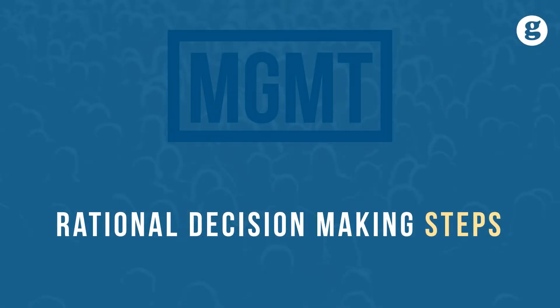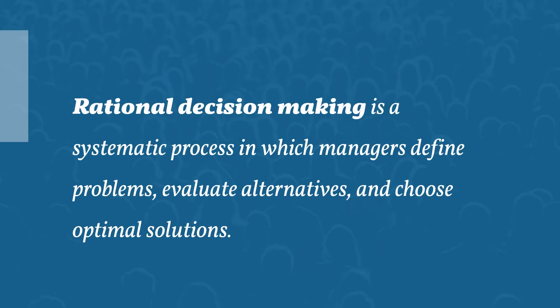Decision-making is the process of choosing a solution from available alternatives. Rational decision-making is a systematic process in which managers define problems, evaluate alternatives, and choose optimal solutions that provide maximum benefits to their organizations.